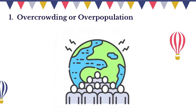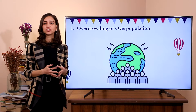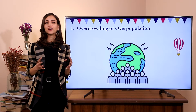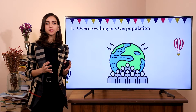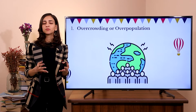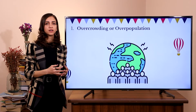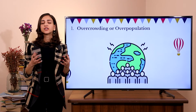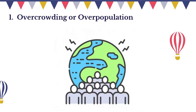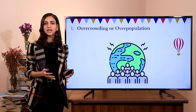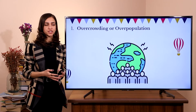We have overpopulation when there are many people from different places in a city. There are so many that there are no houses for them, there are no places for them to stay.